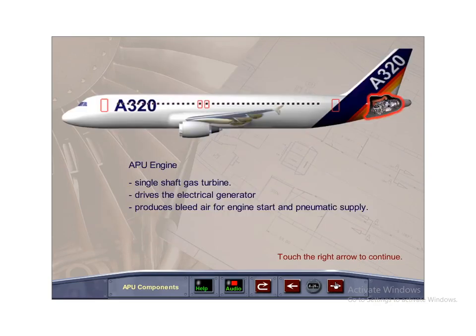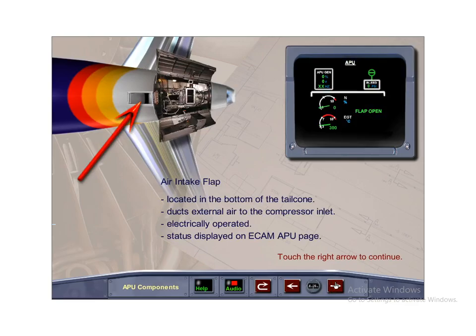The APU engine is a single-shaft gas turbine that drives its electrical generator and produces bleed air for engine starting and pneumatic supply. The air intake flap is located in the bottom of the tail cone. It opens electrically when the APU master switch is placed to the on position and ducts external air to the compressor inlet. The status of the flap is displayed on the ECAM APU page.